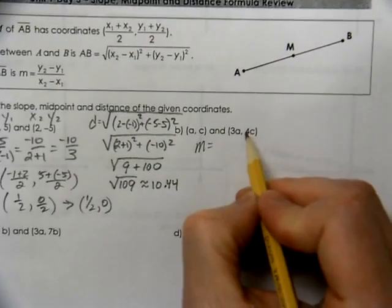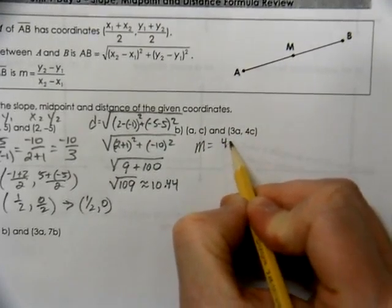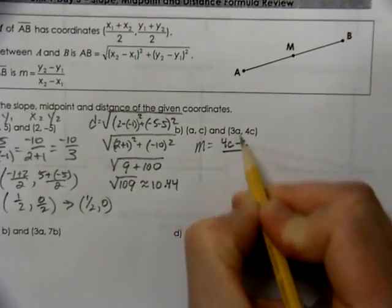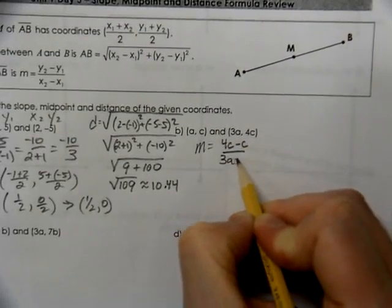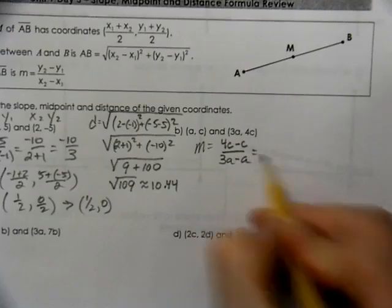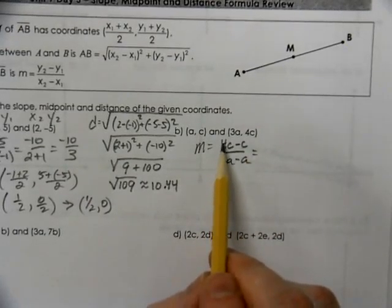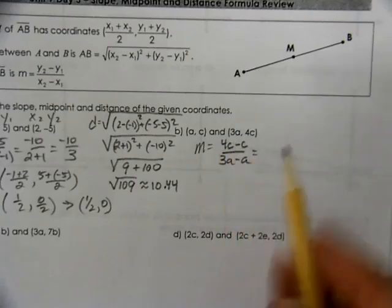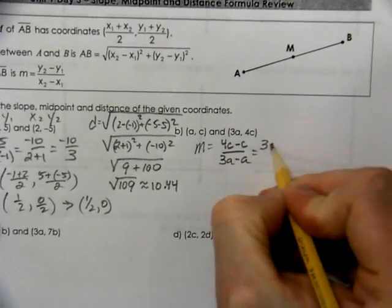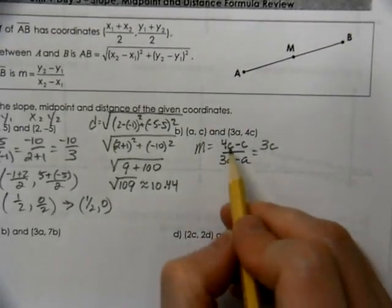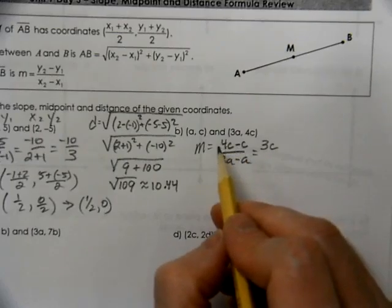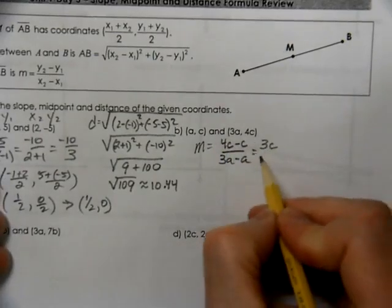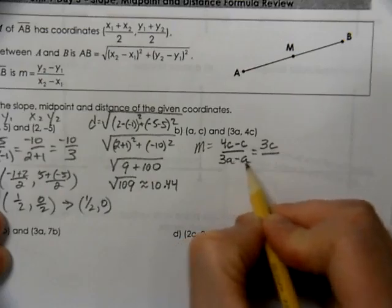The slope. Well, we'll take our y2 minus y1 over x2 minus x1. Now be careful here that you have 4c minus 1c. 4 minus 1 is 3. So now you have 3c's. Don't just cross the c's out, but it's 4 minus 1. This would be 3c over 2a.